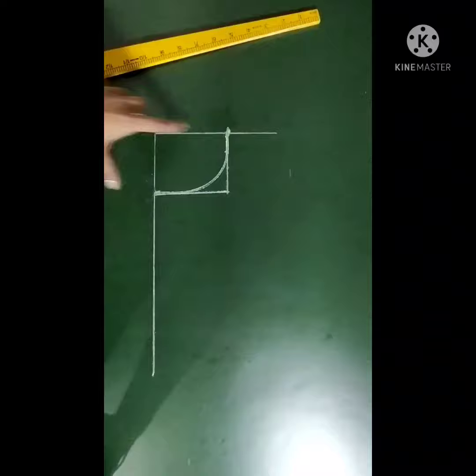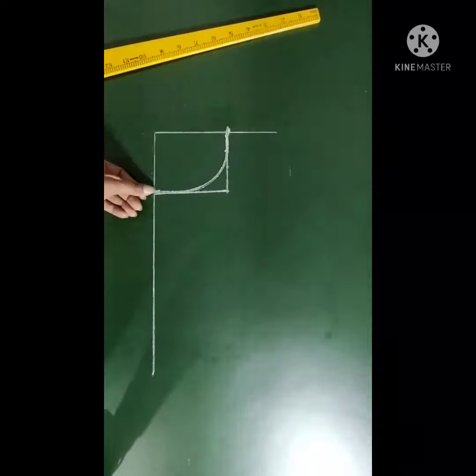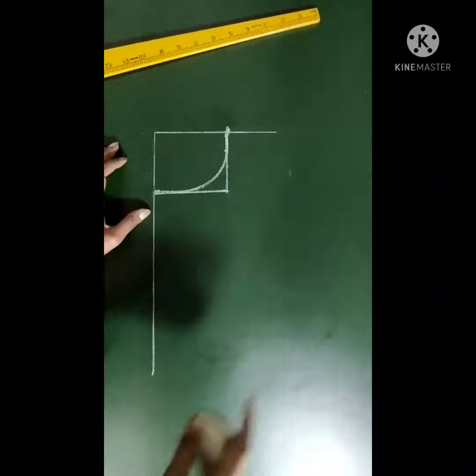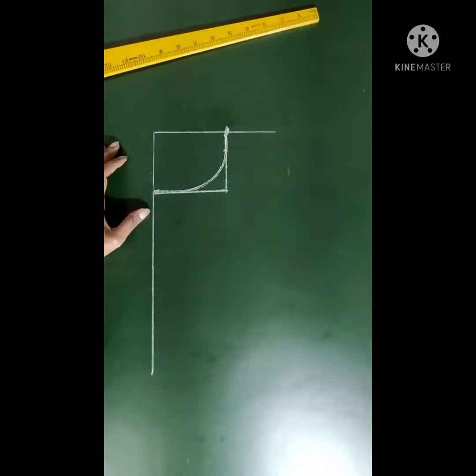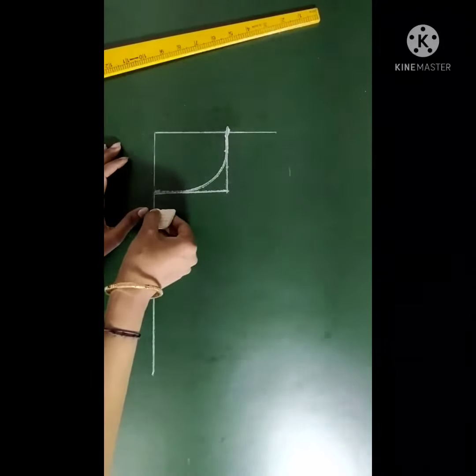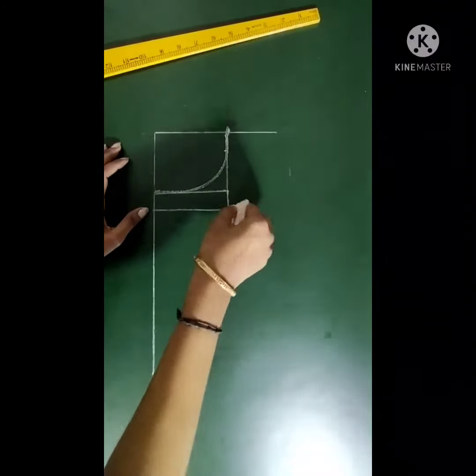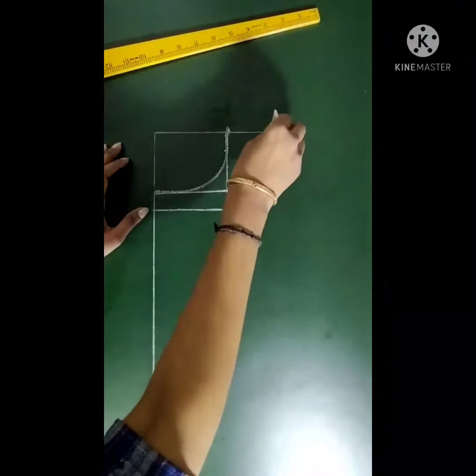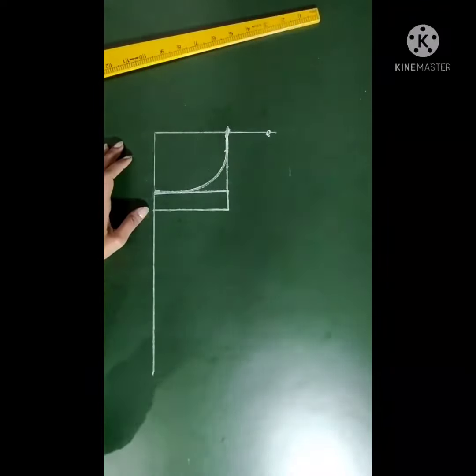This is standard calculation for boat neck. Now if you want either front or back neck more deeper than standard measurement, then we have to reduce shoulder by quarter inch for every 1 inch increase in neck depth. If we increase neck by 1 inch, we have to reduce shoulder by quarter inch.